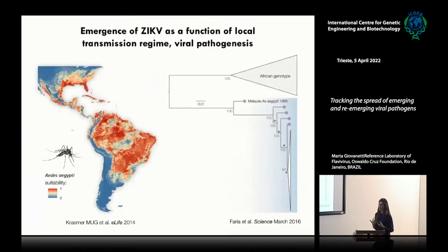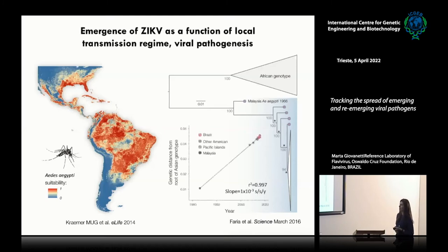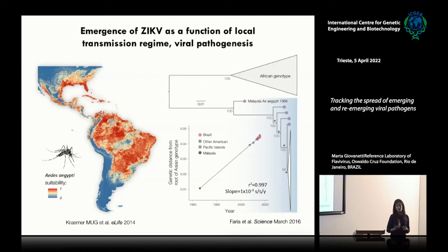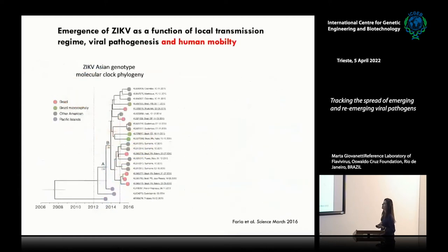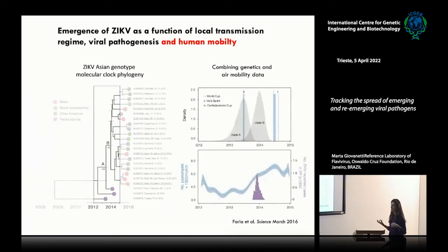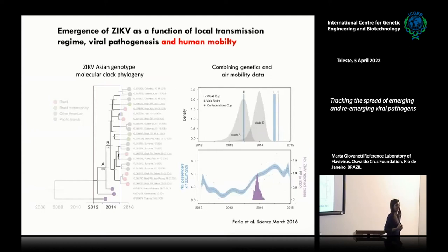We tried to provide information regarding the transmission dynamics of these emerging viral pathogens in South America. In collaboration with the University of Oxford, we also estimated the evolutionary rate — the number of substitutions per site accumulating in the viral genome. For Zika, it is 10⁻³, which is in line with other RNA viruses. We also dated back the introduction events of the Zika virus in the Americas to 2014. We then combined this information with mobility data to understand the likely introduction events — we realized that two events, the World Cup and the Confederation Cup, were likely mediating this introduction.